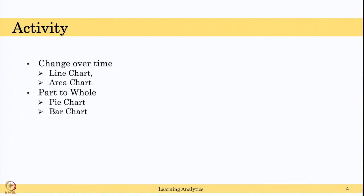For the change over time, you can use line chart or area chart. We have not discussed area chart, but you can check what is area chart. Area chart can also be used to show the change over time. And line chart, we discussed that line chart will be useful to show how the variable value is changing over different time or for different grades or different groups.